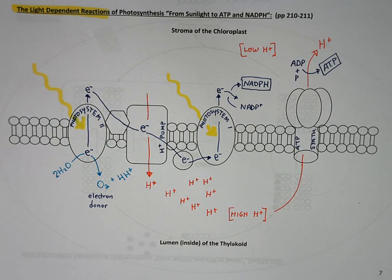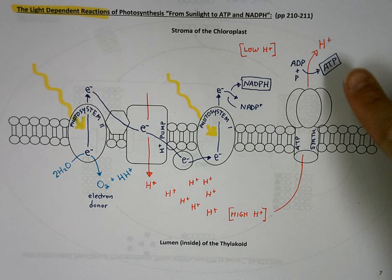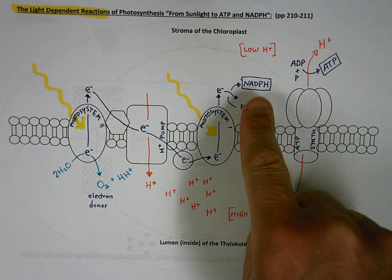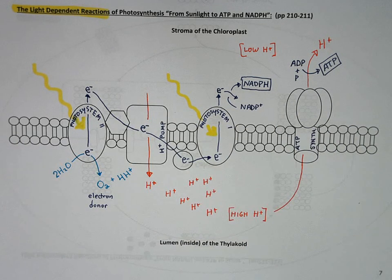And that pretty much concludes the main idea behind the light-dependent reactions of photosynthesis. What is the end result? You've made ATP and you filled up some NADPH with electrons. Those things, the NADPH and the ATP will now go to the Calvin cycle in the stroma of the chloroplast and be used to aid in the production of the sugar in the light-independent reactions of photosynthesis. And that will be the next video.